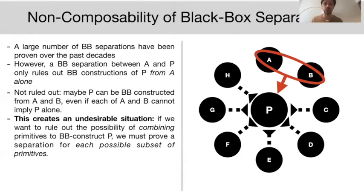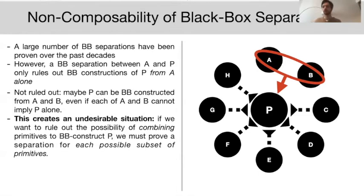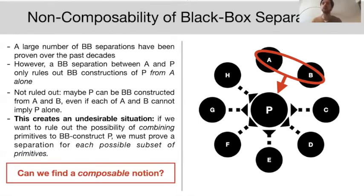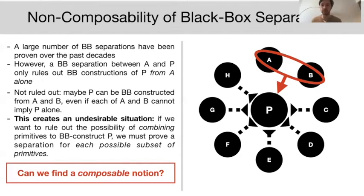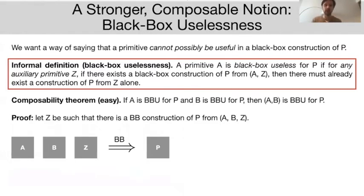This creates a very undesirable situation: if we want to rule out combining various primitives to provide a black box construction of P, the only thing we currently know how to do is prove black box separations between P and any subset of primitives we want to show cannot jointly imply P. In this work, the core question we ask is whether we can achieve a much more meaningful and composable notion of black box separation.